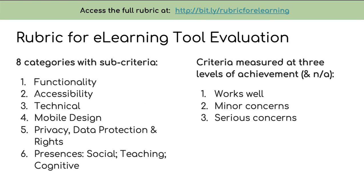I'd like to orient you to the rubric, which you could actually use for evaluating any tool or technology you're considering. The rubric has eight categories — functionality, accessibility and technical, mobile design, privacy/data protection and rights, and then social presence, teaching presence, and cognitive presence as individual categories. Within these eight categories, criteria are measured at three levels of achievement: the ideal situation supporting you and your learners, situations with minor concerns, and situations with serious concerns worth flagging.